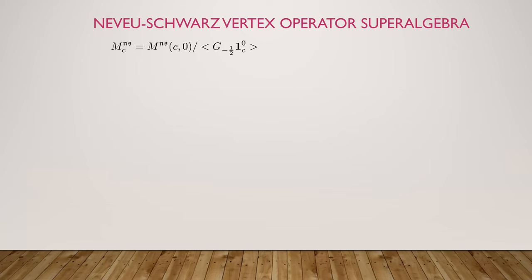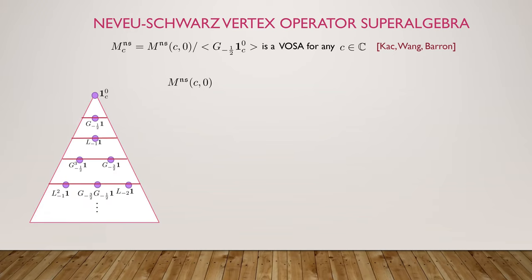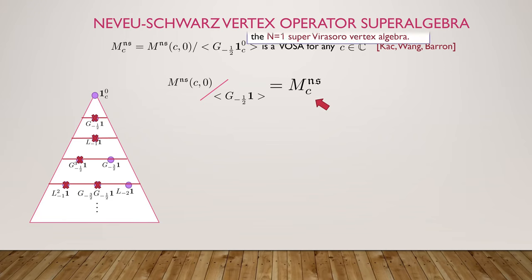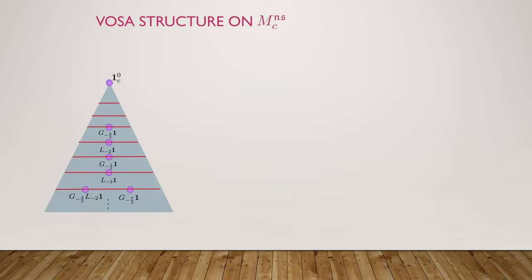What's the N equals 1 vertex operator superalgebra? We take the Verma module for any central charge and conformal weight H equals zero, then mod out by the submodule generated by G_{-1/2} acting on the lowest weight vector. After killing all those descendants, we end up with the vertex operator superalgebra, which I'll call the N equals 1 super VSR. Here's an updated picture of what this vertex operator superalgebra looks like.